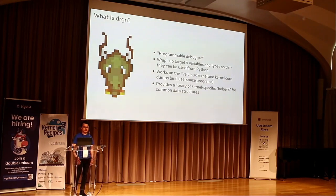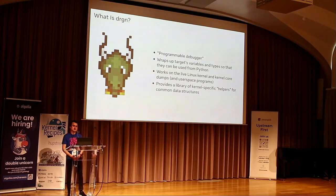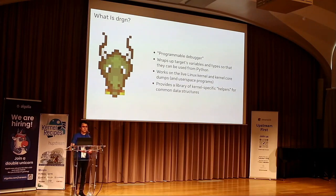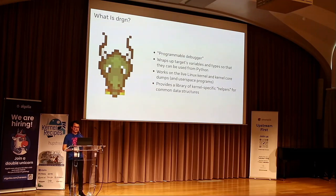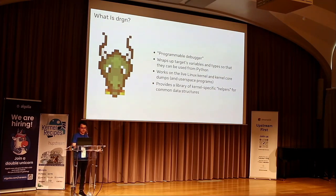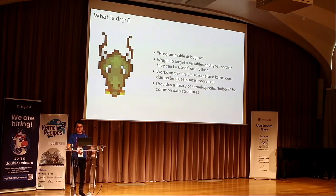Before diving into the demo, let me talk about what Drgn actually is. The tagline I use for Drgn is that it's a programmable debugger. As opposed to classical debuggers with a CLI interface and a fixed set of commands, Drgn gives you a bunch of APIs to program with. For this talk I'm focusing on the Linux kernel — it takes all the variables and types from the kernel, wraps them up, and exposes them as Python variables and types.